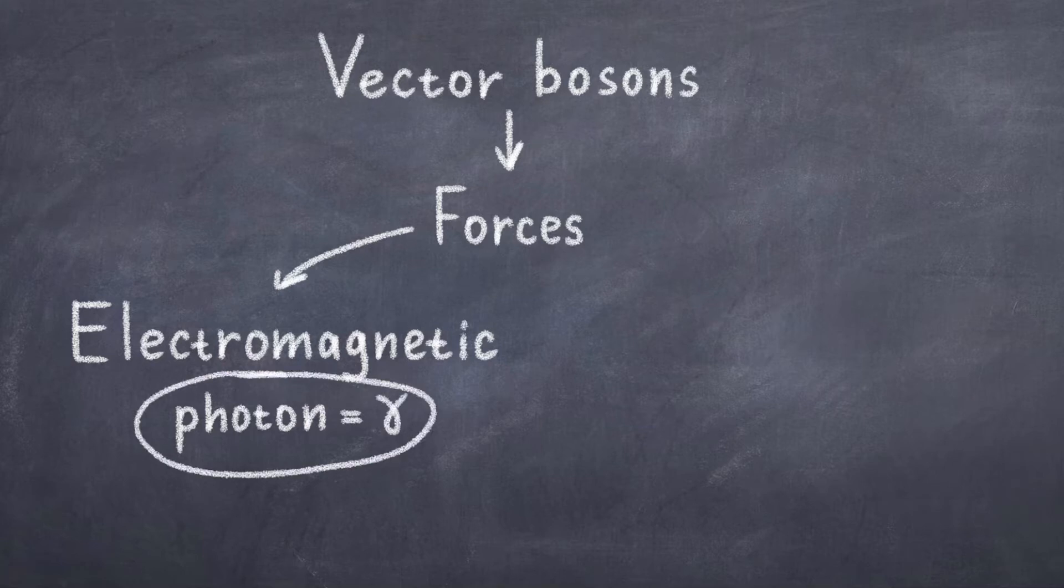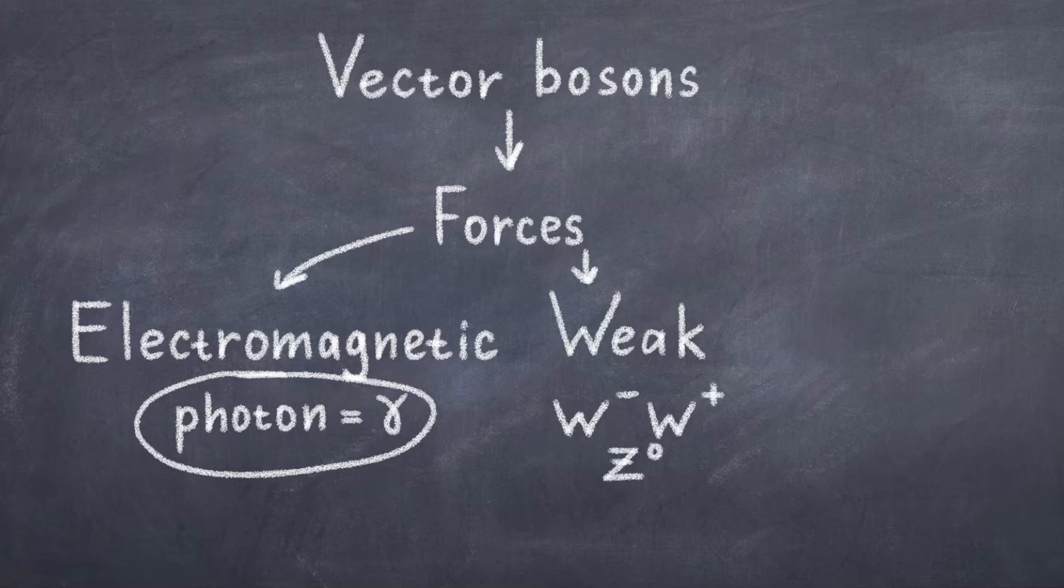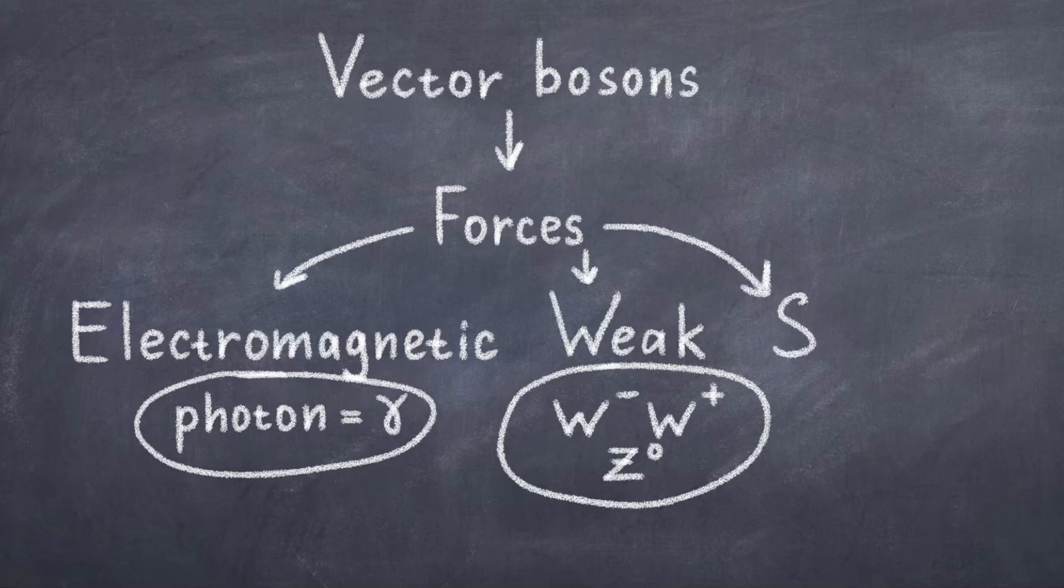We also have three other particles called the W+, W- and the Z bosons. These three bosons carry the weak force and they are all massive. Finally, we have the gluons which carry the strong force and there are actually eight of them and they are all a bit different. These particles are also massless, just like the photon, but we will go into more detail about that later.